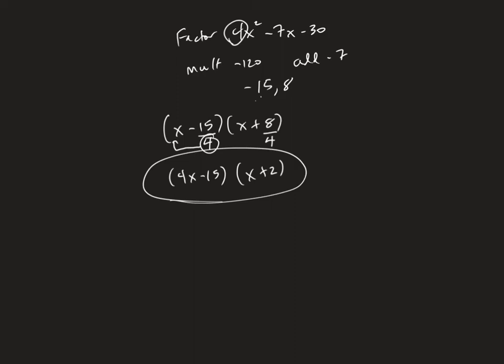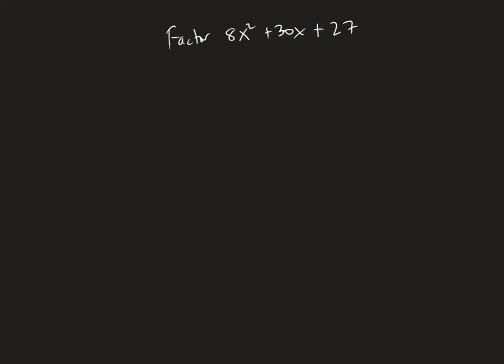And here's that problem. So again, we would start by multiplying A times C: 8 times 27. And I believe that gives you 216.